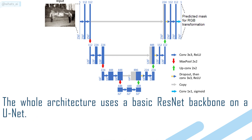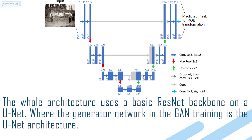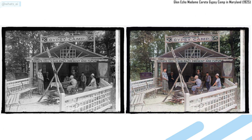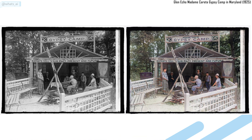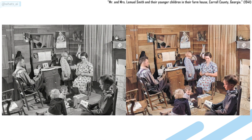The whole architecture uses a basic ResNet backbone on a U-Net, where the generator network in the GAN training is the U-Net architecture. Right now there is no complete explanation of how this works, but the author is currently working on a paper about DeOldify, where he will further investigate why and how his technique, previously found only by trials and errors, works.